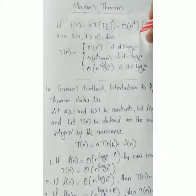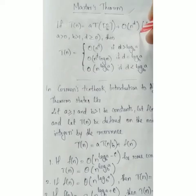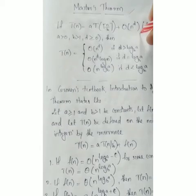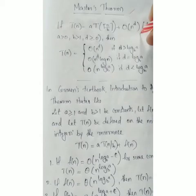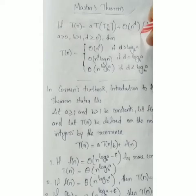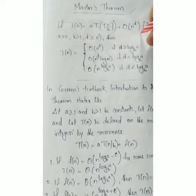The value of a problem solution is n raised to d. f of n is a function where a is greater than or equal to c times n raised to d. Then a greater than 0, b greater than 1, d greater than or equal to 0. Then T of n equals n raised to d if d is greater than log a to the base b.